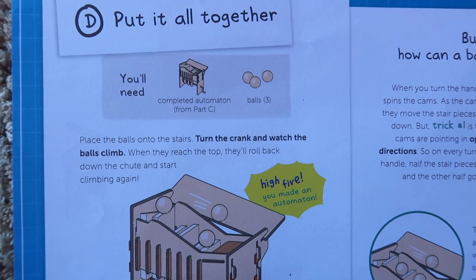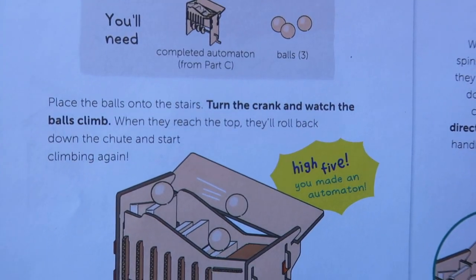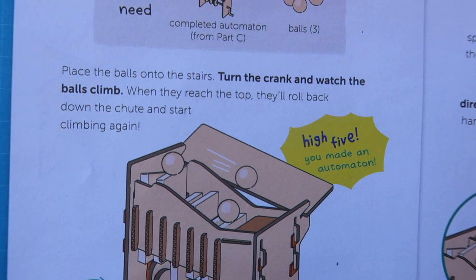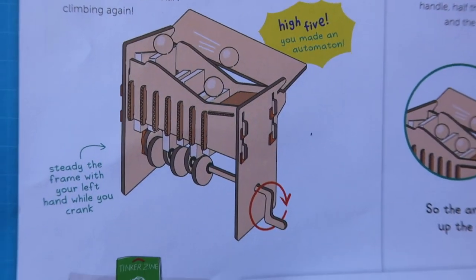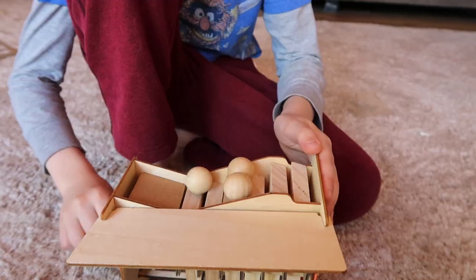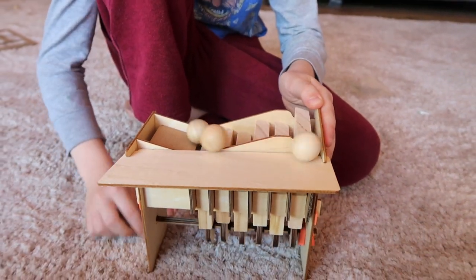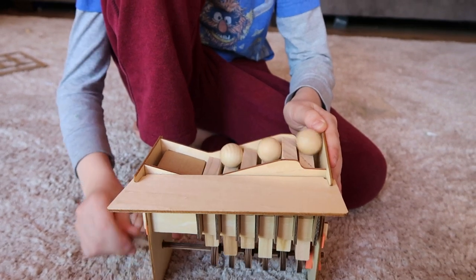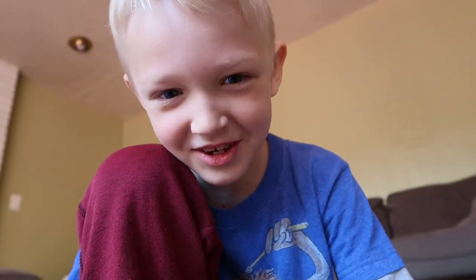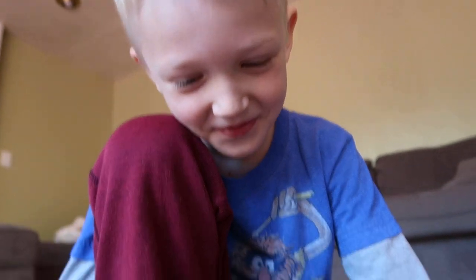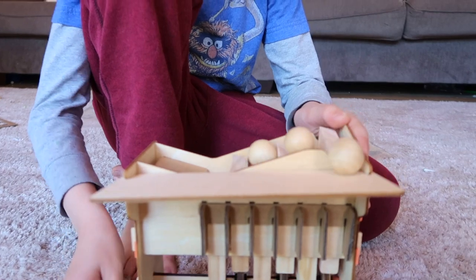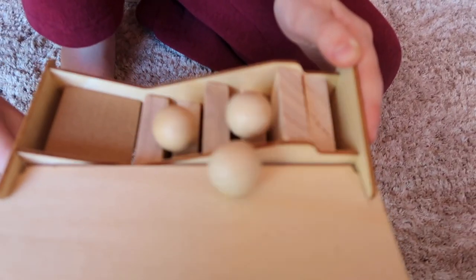Says put it all together. Now we need the three balls. Says place the balls onto the stairs. Turn the crank and watch the balls climb. When they reach the top they'll roll back down the chute and start climbing again. I want to try. Ready? Wow. This is so awesome. Like the remote control balls.